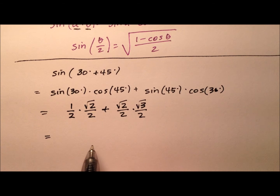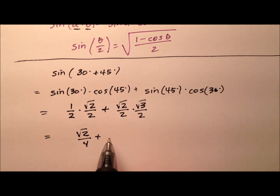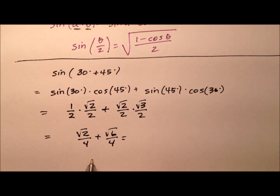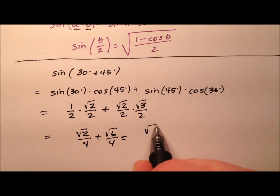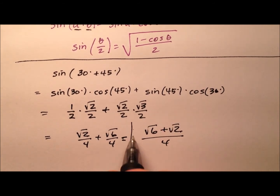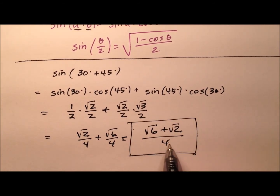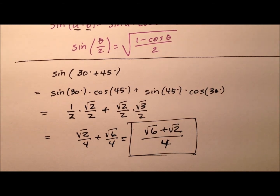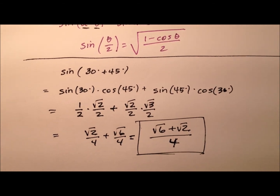Adding these — we'll multiply first — so we get the square root of 2 over 4, and then we add the square root of 6 over 4. We can put this over a single common denominator, putting the larger radical first: the square root of 6 plus the square root of 2, all over 4. And this is the exact value for the sine of 75 degrees.